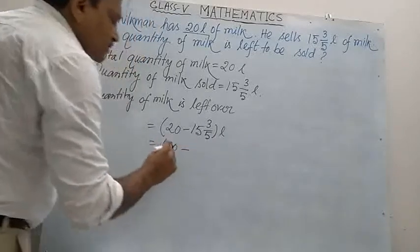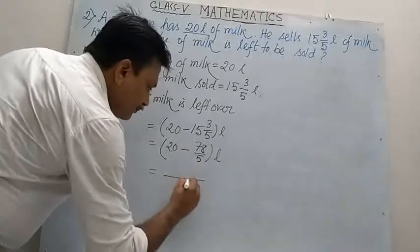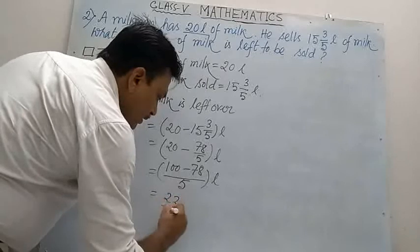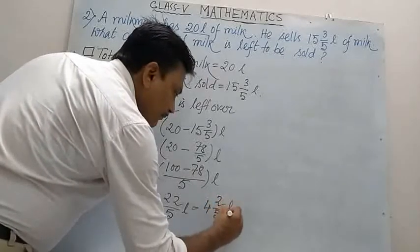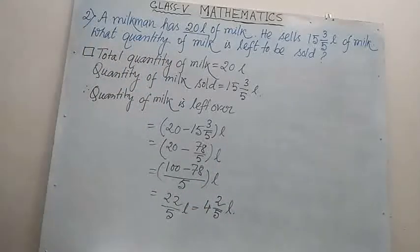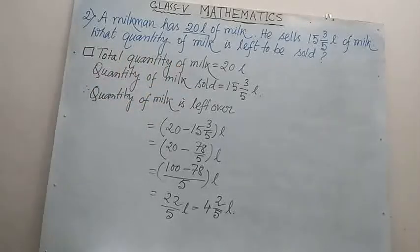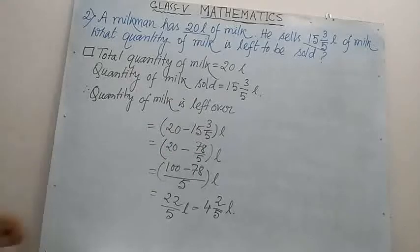This equals 20 minus 78/5 liters, which equals 22/5 liters, which is equal to 4 whole 2/5 liters. So the answer is 4 whole 2/5 liters. Total quantity of milk: 20 liters. Quantity of milk sold: 15 whole 3/5 liters. Quantity of milk left over: 4 whole 2/5 liters of milk.